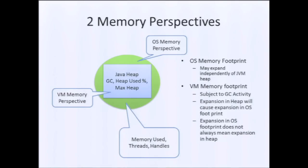I look at really two perspectives of the JVM. When you're running a VM, there's a view from the way the operating system sees it — the memory footprint, handles, threads, CPU utilization of the VM. And then when you run within the virtual machine, you have a different view of memory usage. That's typically what we call the heap — you have allocation and garbage collection happening inside.